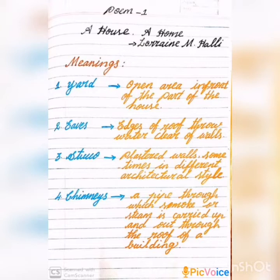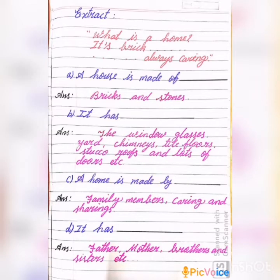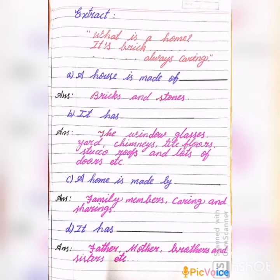Have you understood? Next, we will see the extract of this poem. First, I will read the extract: What is a home? It is bricks always carrying. A house is made of bricks and stones. It has window glasses, yard, chimneys, tile floors, stucco roofs and lots of doors, etc.